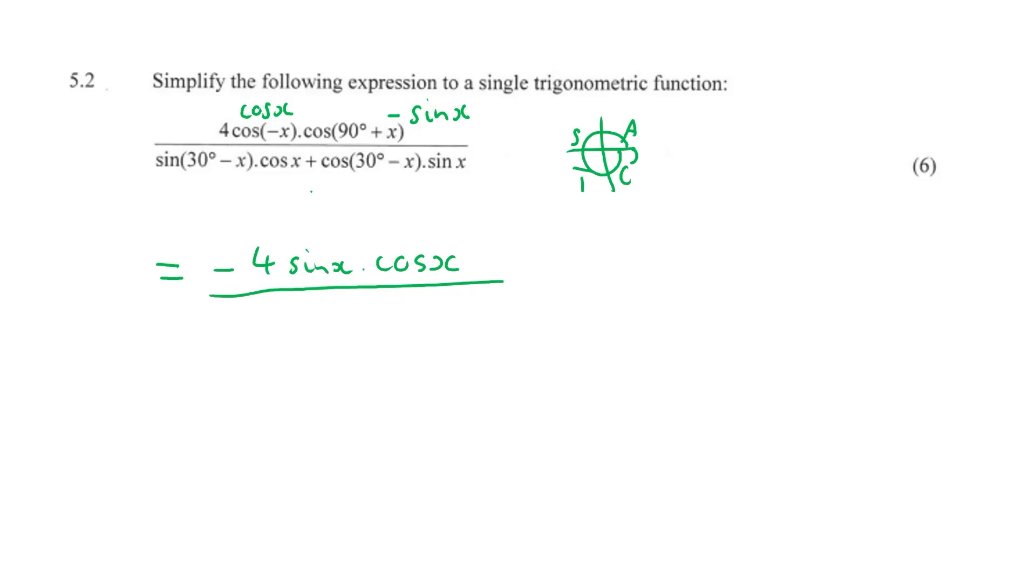It matches exactly what we've got in the formula sheet. See sin(30° - x) times cos(x) plus cos(30° - x) sin(x). So there's your 30° - x's, your cos(x)'s, sin(x) sorted.